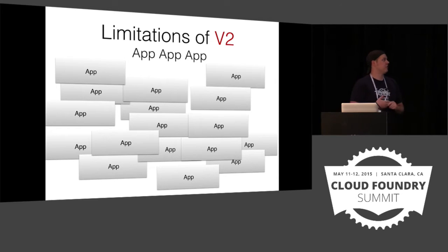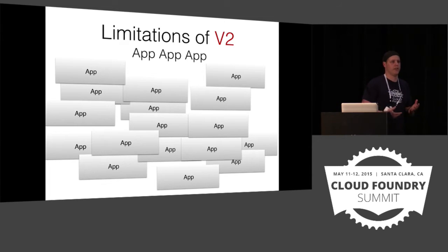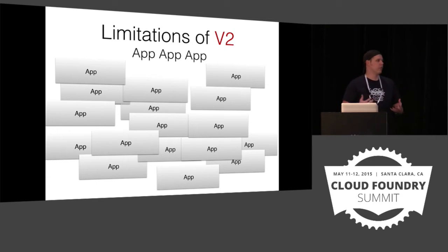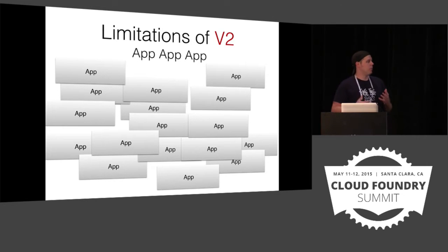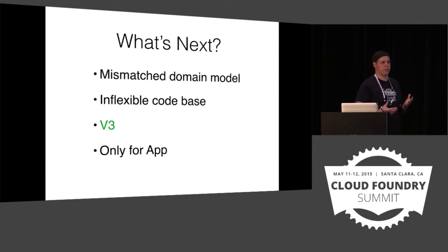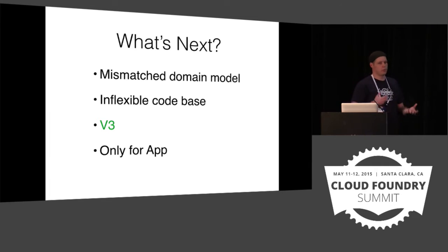Our next limitation is app itself. App is everything in the system — everything talks app. The API is based around app; the backend systems know how to run app and keep app alive. So when we want to start talking about other things, we just don't have a definition for it. It makes it hard to change what app is, but that's what we have to do. We have a mismatched domain model where our existing structure and our desired structure don't match, and a somewhat inflexible code base — so we're going to move on to V3.